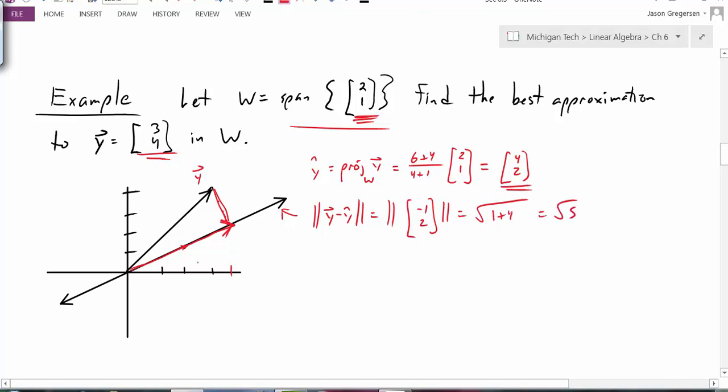Now if I thought about other vectors, so for instance, maybe I could take this vector [2,1], or this vector out here, which might be something like the vector [6,3]. Both of those vectors are also in W. But if I thought about the error in using those as my approximation, I would have the first one would be the error in approximating with [6,3], for instance. If I calculate that, I would have y minus [6,3] would give me a vector that would look like [-3,1]. And the magnitude of this vector should be the square root of 9 plus 1, or the square root of 10. So I can see that that error is certainly bigger than my error in approximating with the projection vector.